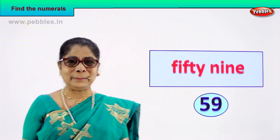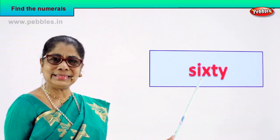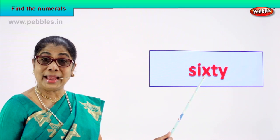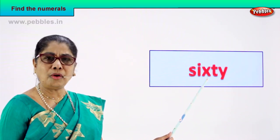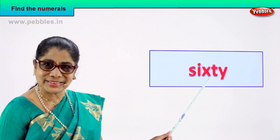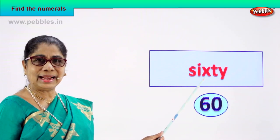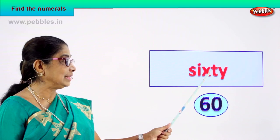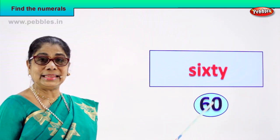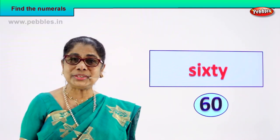Good! Let's take the next number name. Look, read this: S-I-X-T-Y, 60. How do you write the numeral? 60. Good — 6 and 0, 60. S-I-X-T-Y, 60. 6 and 0, 60. This is the numeral for this number name. Very good!